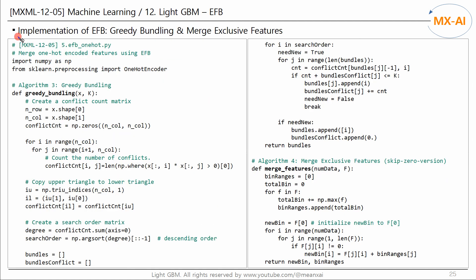Now let's implement this in code. In the third video of LightGBM, the greedy bundling algorithm was implemented as follows. And in the fourth video, the merge exclusive features algorithm was implemented like this. Let's merge the one-hot encoded features using these two algorithms.